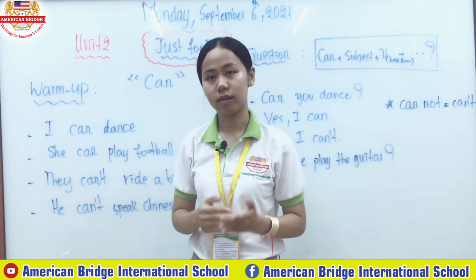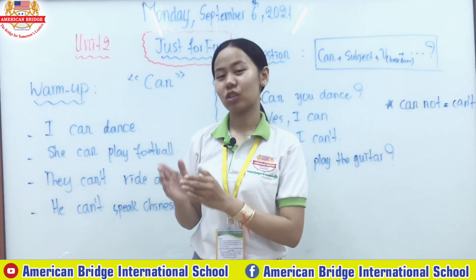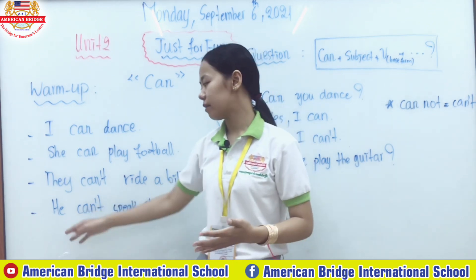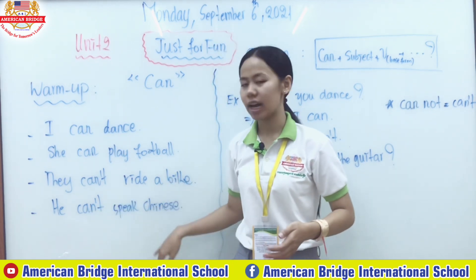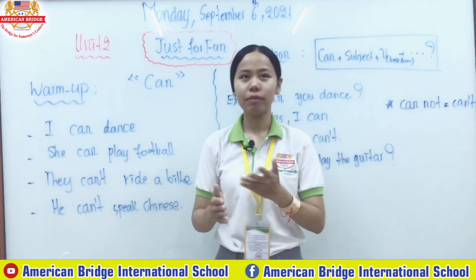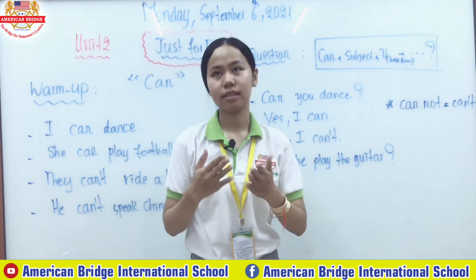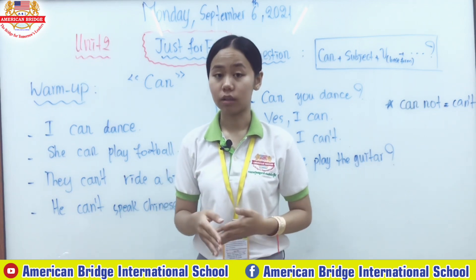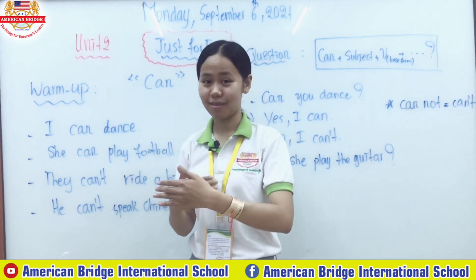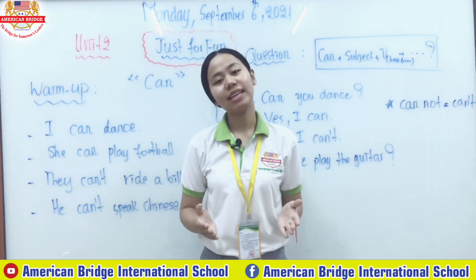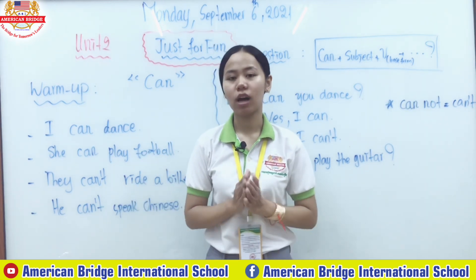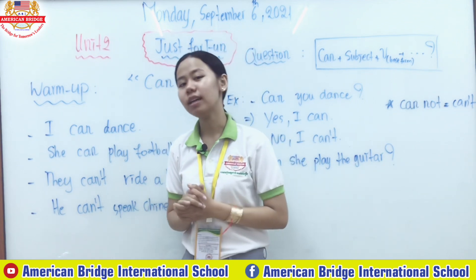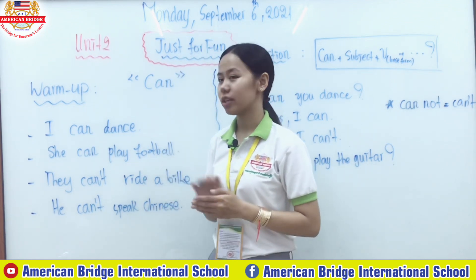For the negative form, we have: subject + 'can' + 'not' + verb in base form + object. For example: 'He can't speak Chinese.' When we add 'not,' it gives the sentence a negative meaning — it is the opposite of the positive form.